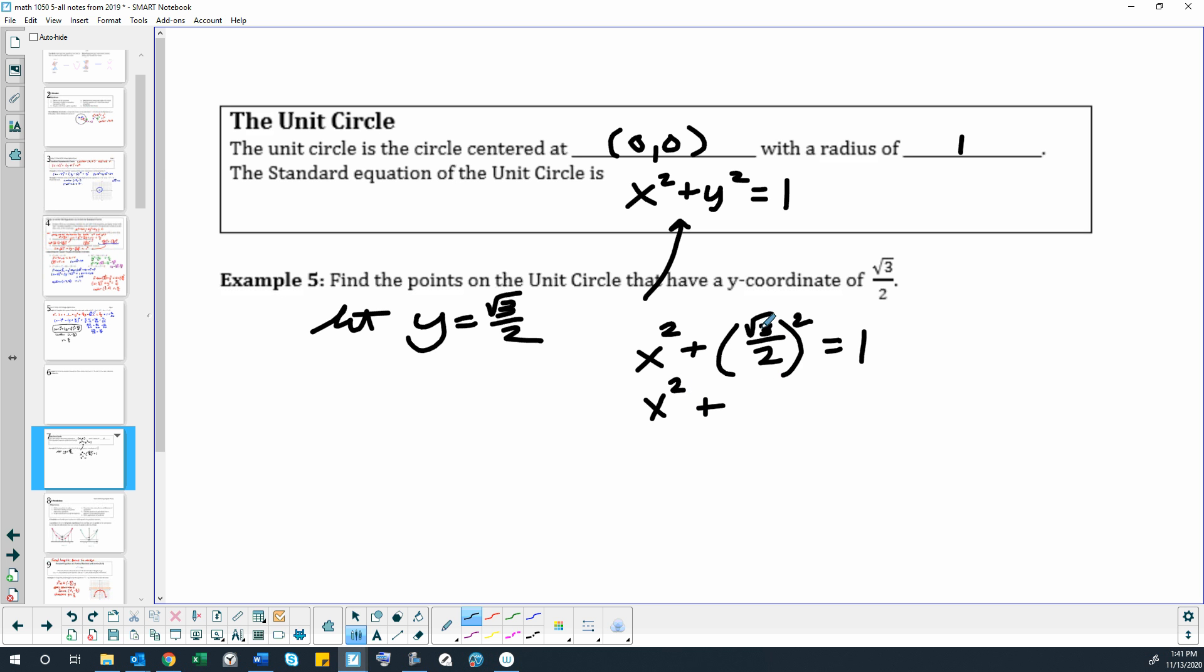So x squared plus square root of 3 squared would be 3. And 2 squared is 4. So then we subtract our 3 fourths from both sides.